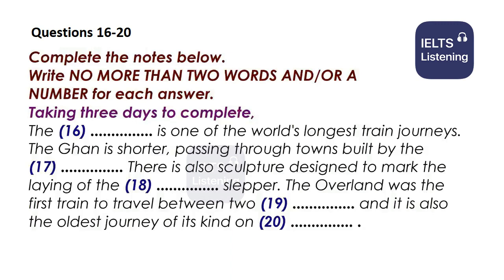Along the way you can see the Iron Man sculpture, constructed by railway workers to commemorate the one millionth concrete sleeper laid during construction of the line. Finally, the Overland runs between Melbourne and Adelaide. As the first train to travel between the capitals of two states, it is a historic as well as relaxing way to travel, and is famous for being the oldest long-distance train journey on the continent. With so many memorable journeys to choose from, the only problem you'll have is knowing which one to do first.